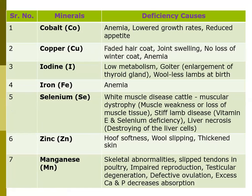For cobalt, its deficiency leads to lower growth rates and reduced appetite. For copper, it is also required in animals, especially poultry, but their concentration should be very low as higher concentration of copper may lead to toxicity. The deficiency of copper causes faded hair coat, joint swelling, no loss of winter coat, and anemia. Cobalt and copper, along with iron, cause anemia through their deficiency.